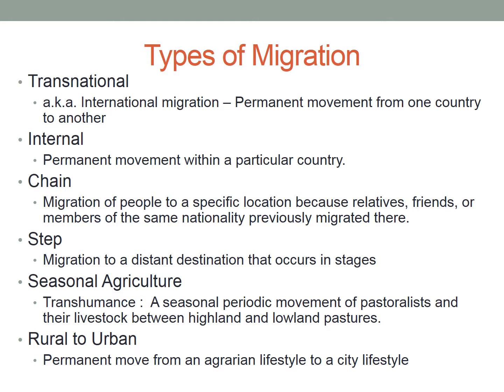Our final type of migration on this slide is rural to urban migration — a permanent move from an agrarian, rural lifestyle in the countryside or farmland to a city, or urban, lifestyle.